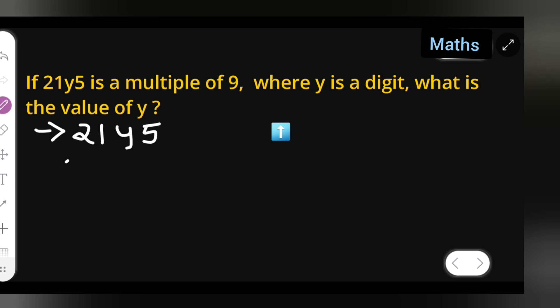Therefore, you can add these numbers: 2 plus 1 plus y plus 5. I'm putting the addition sign here. So after that, 2 plus 1 is 3, 3 plus 5 is 8. So we write down 8 plus y equals...